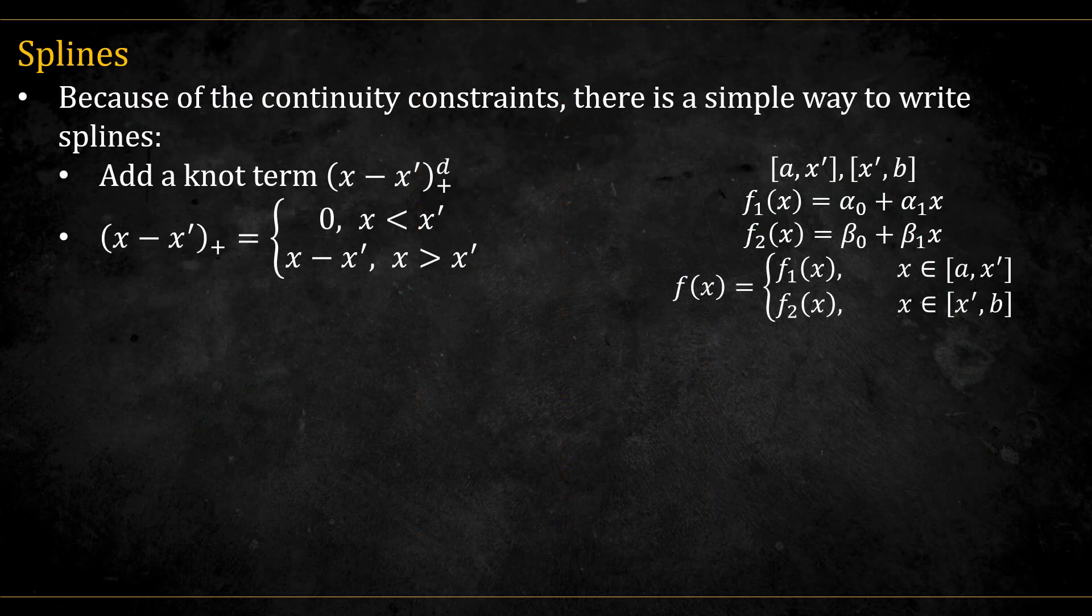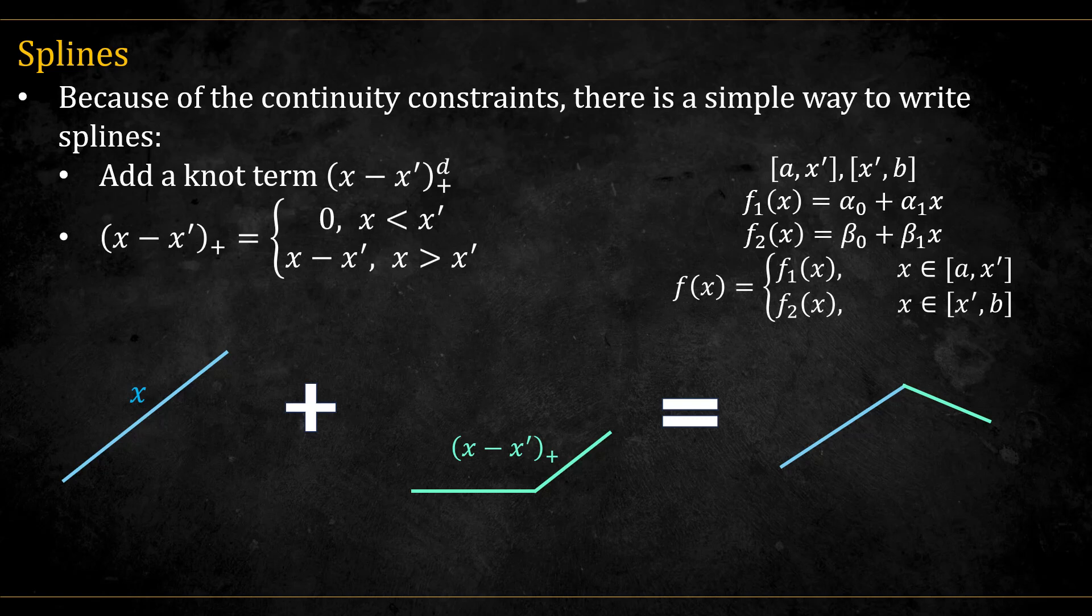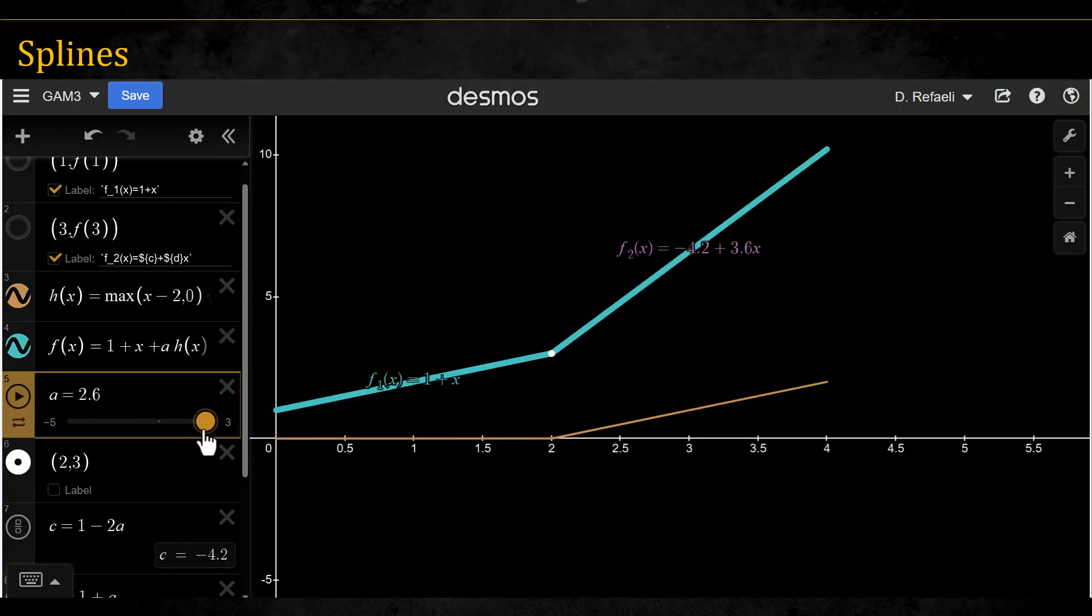Because of the continuity constraints, there is a simple way to write splines algebraically. For every knot, we can add the following term, which is equal to x minus x prime if x is greater than x prime and zero otherwise. This makes sense because we are essentially telling the function it can change direction at every knot location. These extra knot terms are sort of levers we can pull and push to change how the function acts past the knot value. Here is a demonstration of this.